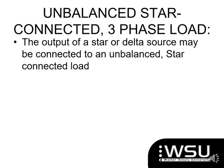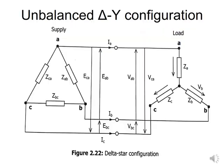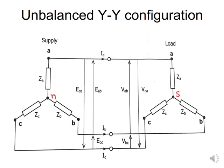You can either have a star or a delta source which gets connected to the load. This first configuration shown is a delta-to-star configuration. Please notice the voltages and currents given in the configuration, which we should be familiar with by now. We also have a star-to-star configuration.